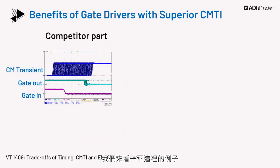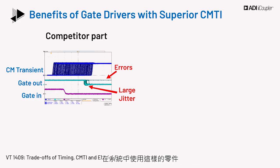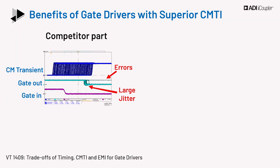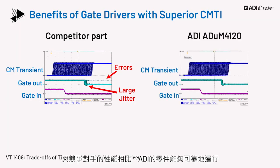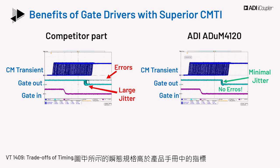Let's look at an example shown here. The competitor part shows various error signatures at large and fast transients. Using such a part in the system may not be suitable in a SiC or GaN system which has fast transients. In fairness, the failure signature is obtained above the rated CMTI of the part as per the datasheet. In comparison, the ADI part is able to reliably operate without any glitch at the same transient level as the competitor part. The transients shown in the figure are at a spec higher than quoted in the datasheet.